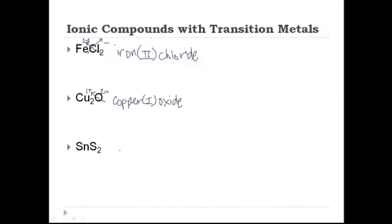And finally, a slightly more difficult one: SnS₂. Sn is tin, which is a transition metal, so I'm going to make parentheses to leave room for the Roman numeral. S is sulfur, which turns into sulfide. There's nothing after tin; however, sulfur actually has a charge of two minus, and here we have two atoms of sulfur. I need the whole compound to have a neutral charge. So two sulfurs each with a charge of two minus gives a total of minus four on the right side. That means tin must have a charge of plus four — tin(IV) sulfide.